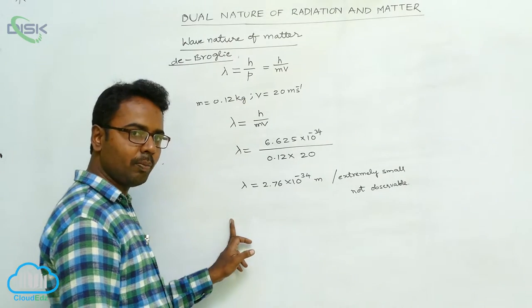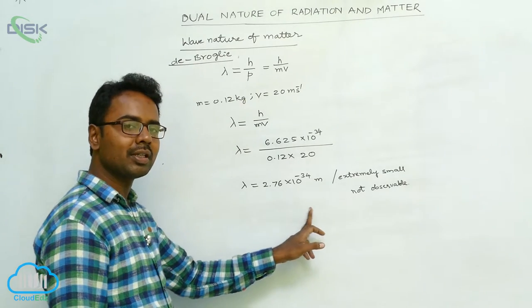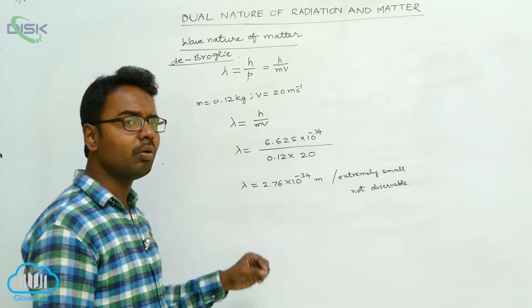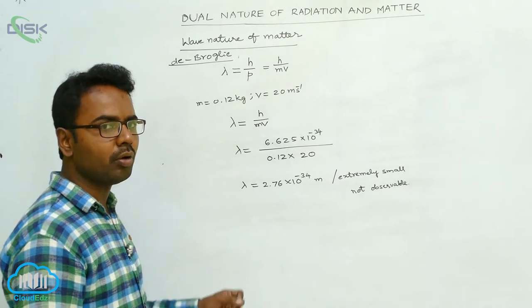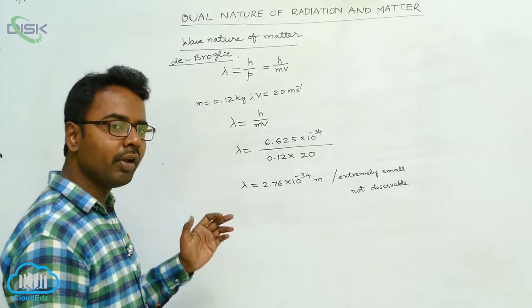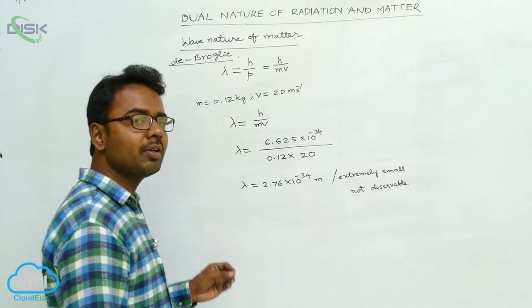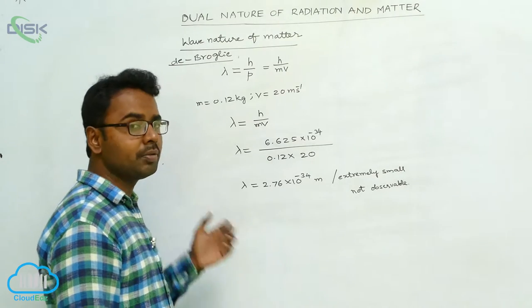This is an extremely small wavelength — 2.76 × 10⁻³⁴ meters. A wave is possible with such an extremely small wavelength, but it is not observable.